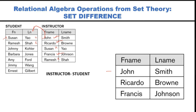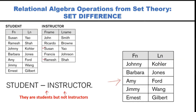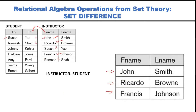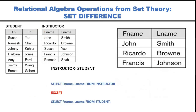So the resulting tuples from 'instructor minus student' are: John, Ricardo, and Francis. The attribute names in the result are first name and last name, taken from the first relation (instructor).